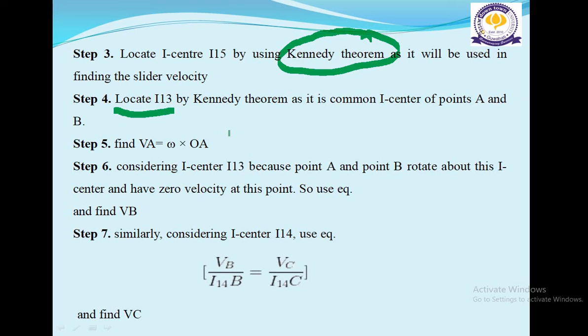Step 5: Find VA which equals omega times OA. Step 6: Consider I-center I13 because points A and B rotate about this I-center and have zero velocity at this point. So we use the equation and find the value of VB.